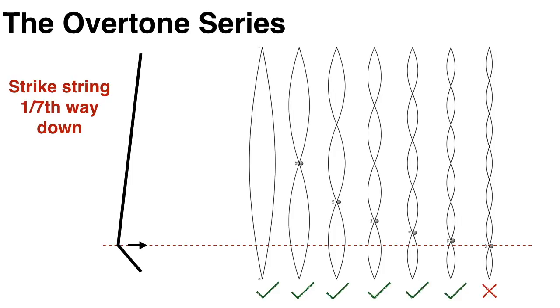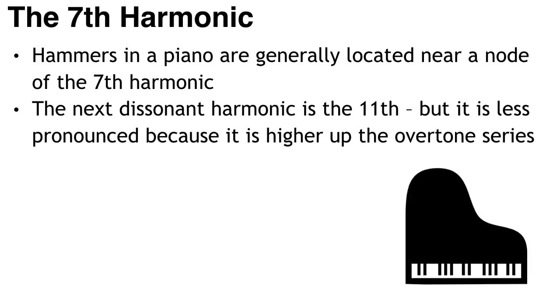So plucking the string one seventh of the way down from the end means the seventh harmonic will not be present in the note, and you will remove that dissonant overtone. And that's why you'll find that the hammers in a piano are generally located near a node of the seventh harmonic.